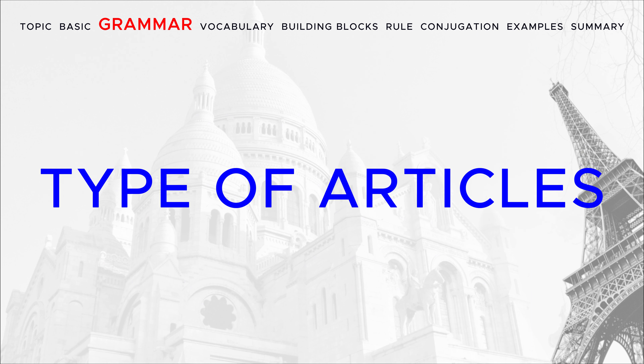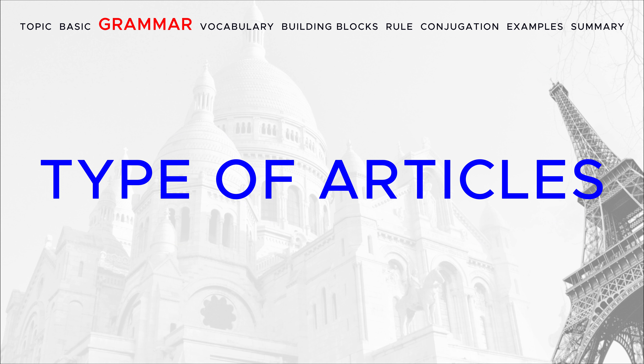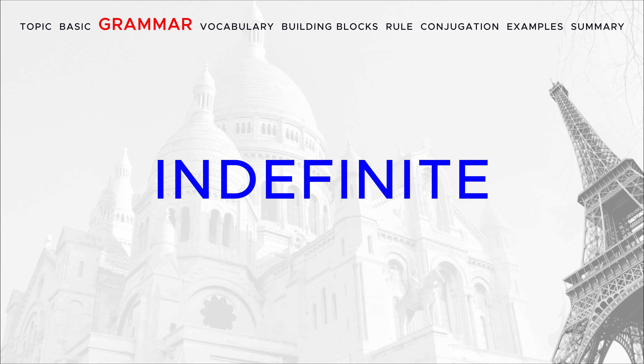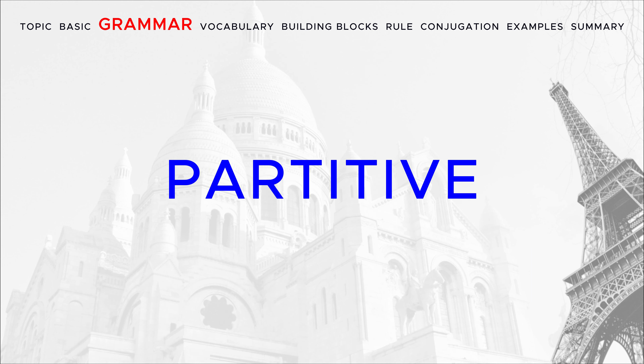There are three types of French articles, and they all agree in gender and number with the nouns they modify as per the gender agreement rule. There are three types of articles: Definite, Indefinite, and Partitive.